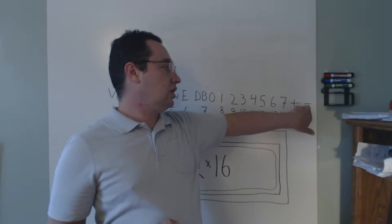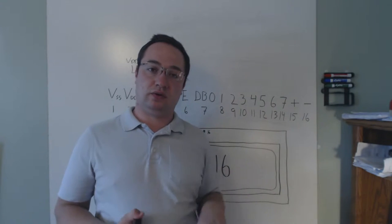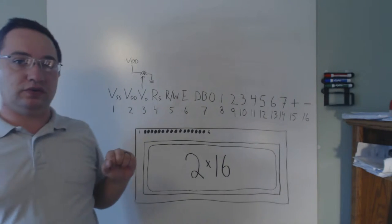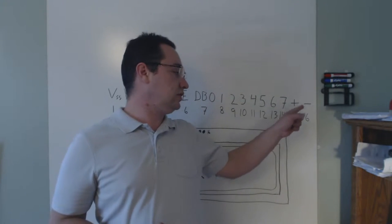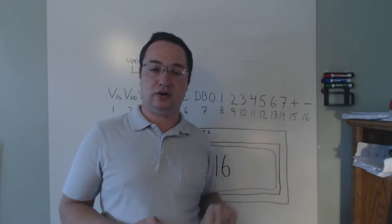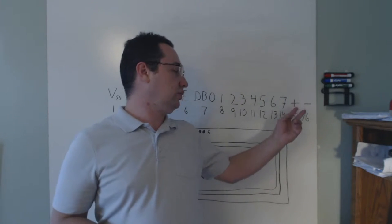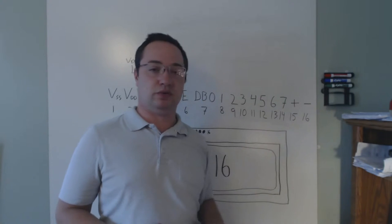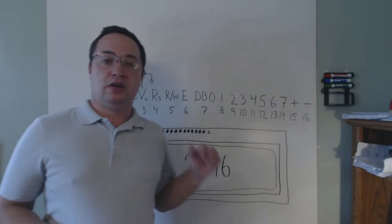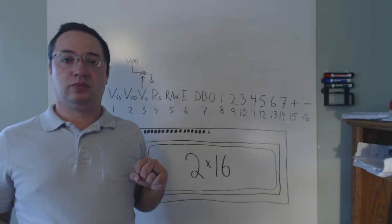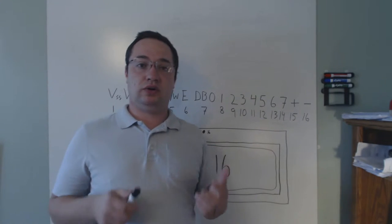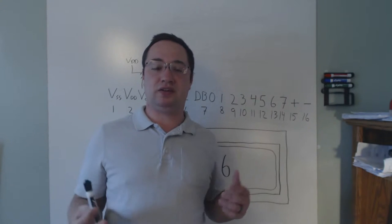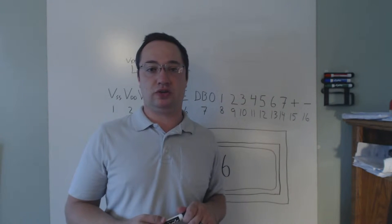The final two pins are the plus and minus pins for the LED backlight of the screen. The screens come in either 5 volt or 3.3 volt, and the voltage for these backlight pins is the same as the voltage for the logic pins. The current-limiting resistor is built right into the screen, so you can just apply a voltage directly to these pins. That covers how you wire up your screen.